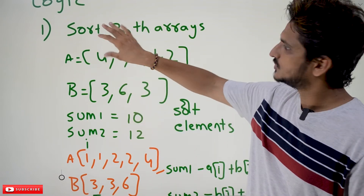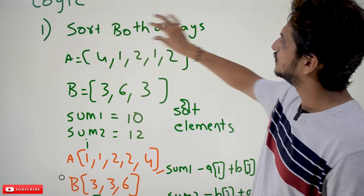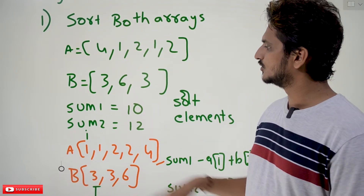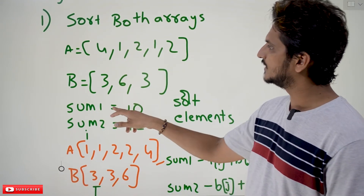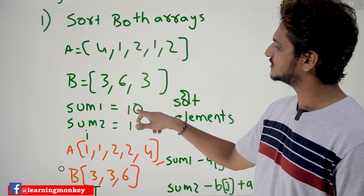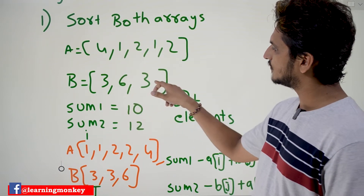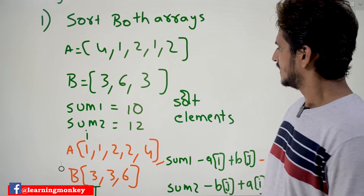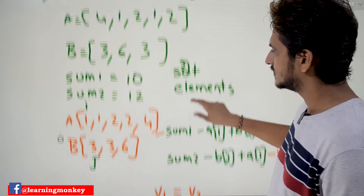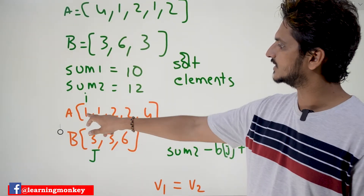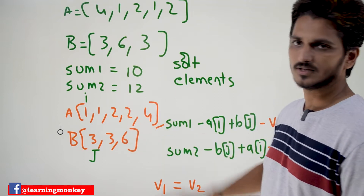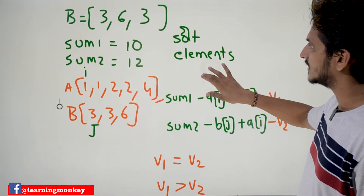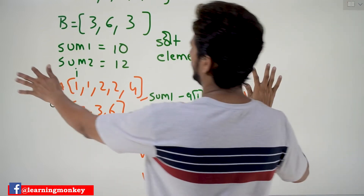You need to sort both the arrays. First, sum1 — the summation of all elements in A — is 10. Sum2, the summation of all elements in B, is 12. After sorting the elements, A becomes {1, 1, 2, 2, 4} and B becomes {3, 3, 6}. Now the logic goes like this after sorting the elements.